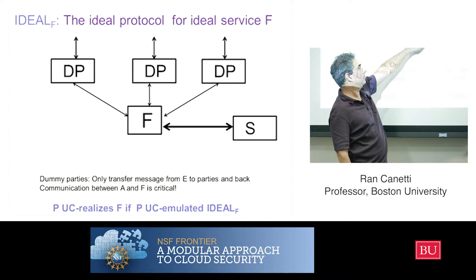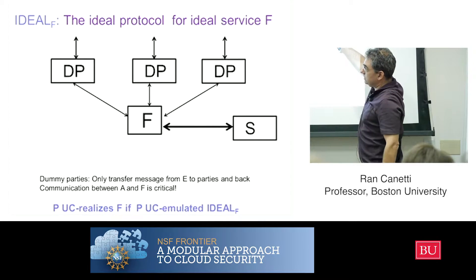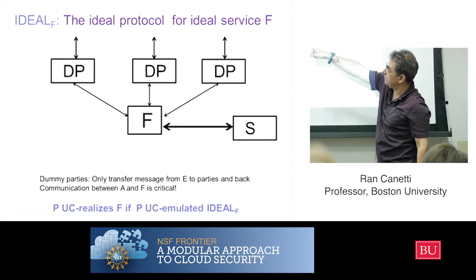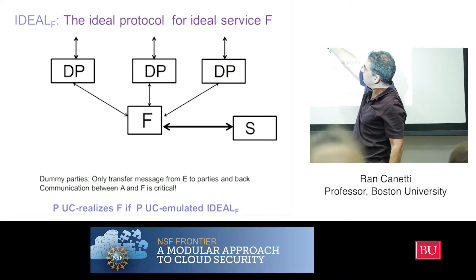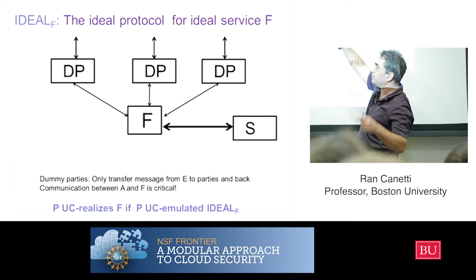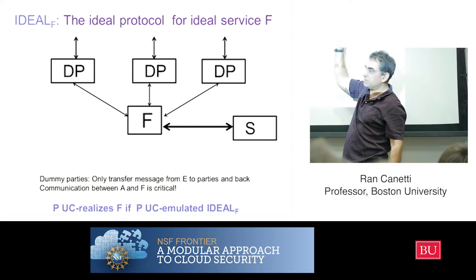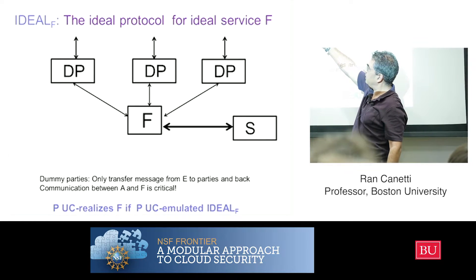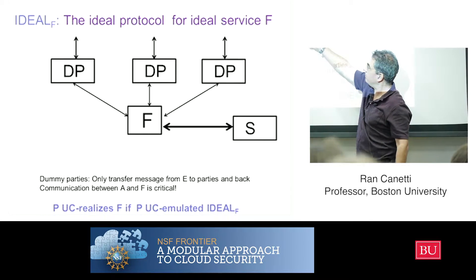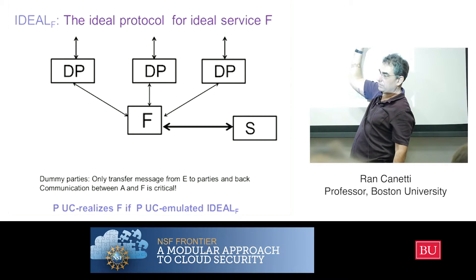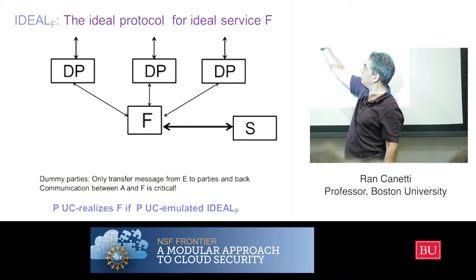So that's the ideal protocol. One thing to notice is that the adversary — which is the simulator — talks only to the ideal function; it doesn't talk to these dummy parties. This is actually important from a software engineering point of view, because this is a very important channel: it captures how much information f leaks to the adversary, to the simulator, and how much influence the simulator is allowed to exert on the specification.